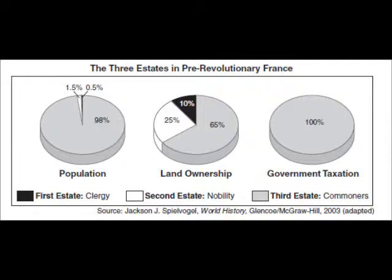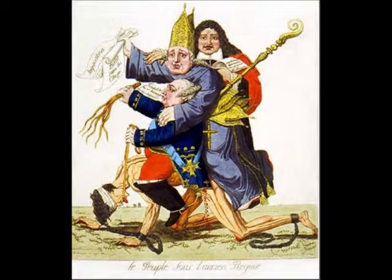The issue the third estate had with this system is represented by this cartoon, sketched by David for a newspaper. Here you can see the king, a clergy member, and a noble person riding on the back of the chained commoner. The meaning is clear: the upper class is being held up by the blood and toil of the lower classes, who paid the taxes and tithes that supported the luxurious lifestyles of the upper classes.